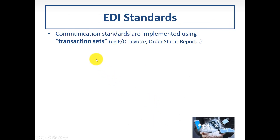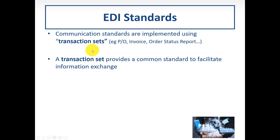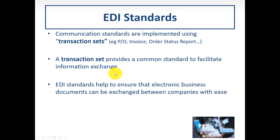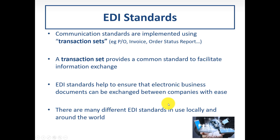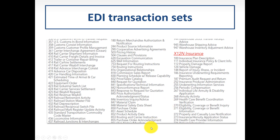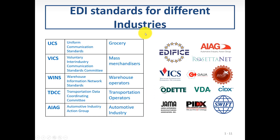There are EDI standards implemented by means of transaction sets. For example, purchase orders, invoices, and order status reports all use transaction sets that provide a standard to facilitate exchange. EDI standards help ensure that electronic business documents can be exchanged between companies with ease. There are many different standards used locally and around the world, all codified by numbers and families — as shown in this catalog.